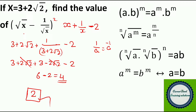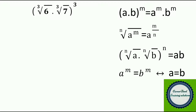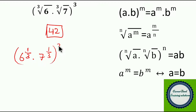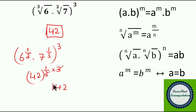Now moving to the next question: (3rd root of 6) × (3rd root of 7), to the whole power 3. If you closely look at this, it is in the format of (n-th root of a) × (n-th root of b), to the whole power n, which equals a × b. So 6 × 7 = 42. To explain further: write it as 6^(1/3) × 7^(1/3), to the whole power 3. This is a^m × b^m = (a×b)^m = (6×7)^(1/3×3). The 3's cancel, and you are left with 42. The answer is 42.